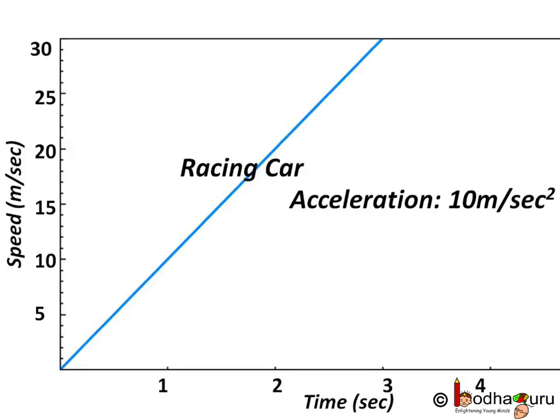If you look at the speed-time graph of such a powerful car, you will realize it is climbing very fast because speed is increasing rapidly. So within three seconds it crossed 30 meter per second speed. 30 meter per second means 108 kilometer per hour. It crossed 108 kilometer per hour speed in 3 seconds.